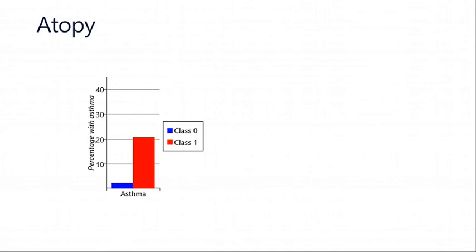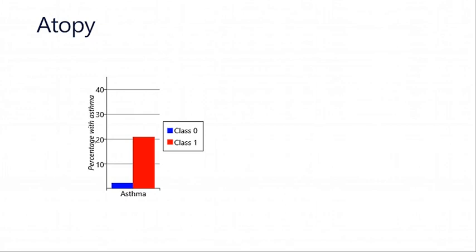What's that got to do with asthma? The standard predictor for asthma is called atopy — does the child have one or more sensitizations? If we force the model to just two groups, we see 20% of children in class one have asthma. But looking at the natural groupings, we see a very different picture: children in the multiple-early class have a probability of asthma of nearly 40% — almost doubled. There's a strong association between that particular temporal trajectory of early multi-allergen sensitization and the propensity to have asthma.